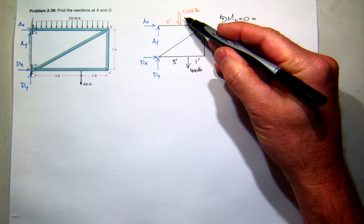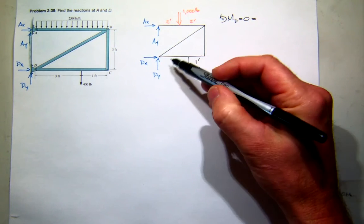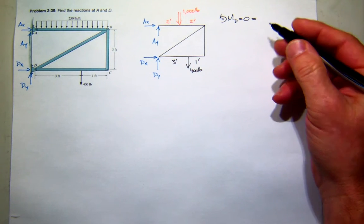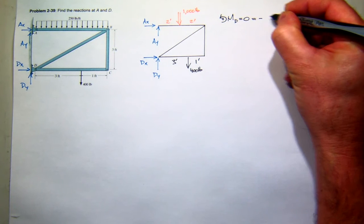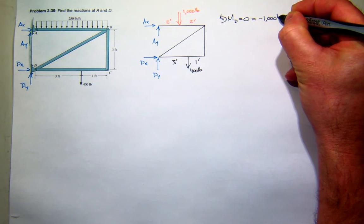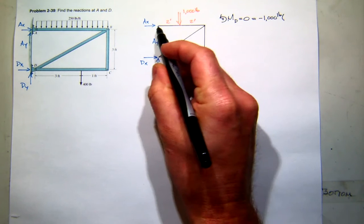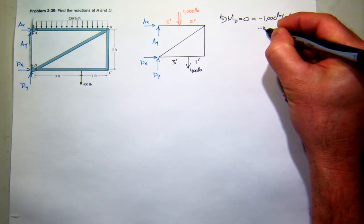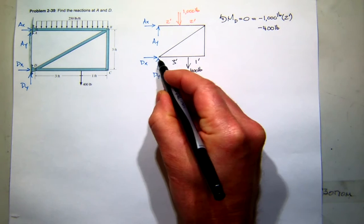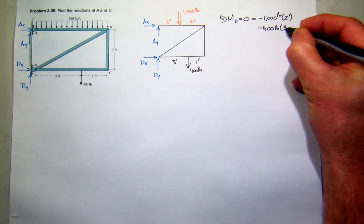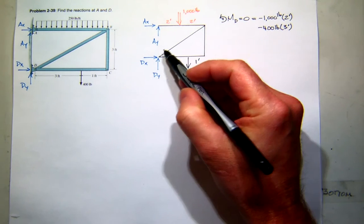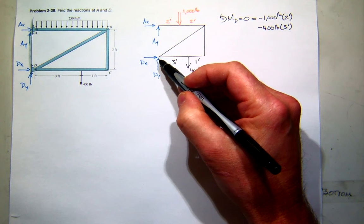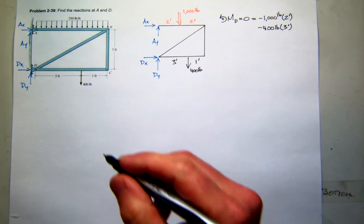Negative. So I'll start at the top, so I'll have a negative 1,000 pounds. And it has a moment arm about D of 2 feet. And then I'll have minus 400 pounds. And it has a moment arm of 3. So far so good? Now, what else creates a moment about D? Does Ay create a moment about D? Ax does not. So Ax. What kind of moment does Ax create about D? Negative.